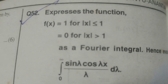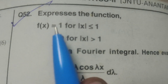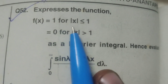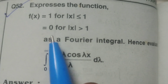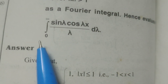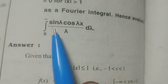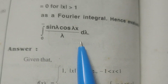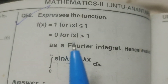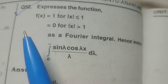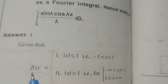This is Dr. Ayutthi. Today we are going to express the function f(x) equals 1 for |x| ≤ 1, and 0 for |x| > 1, as a Fourier integral, and hence evaluate the integral from 0 to infinity of (sin λ · cos λx) / λ dλ. We are going to solve this problem using the Fourier integral.